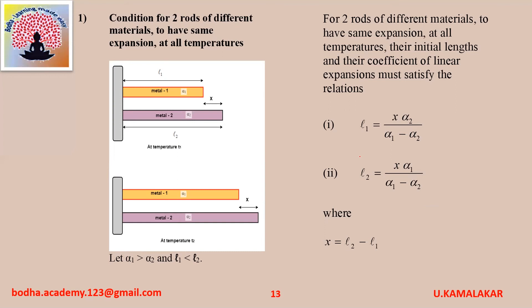Condition for two rods of different materials to have the same expansion at all temperatures: let alpha1 be greater than alpha2 and L1 be less than L2. Their initial lengths must satisfy: L1 equals X into alpha2 divided by (alpha1 minus alpha2), and L2 equals X into alpha1 divided by (alpha1 minus alpha2), where X equals L2 minus L1.